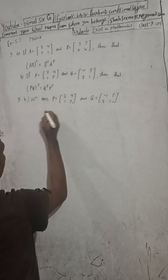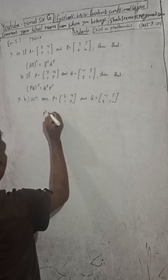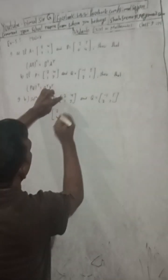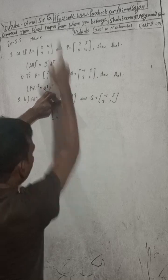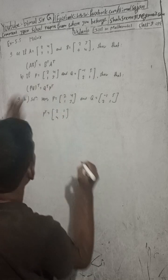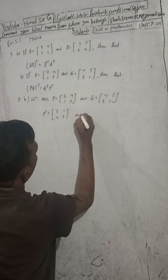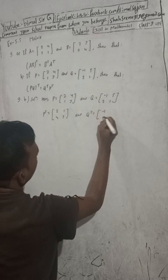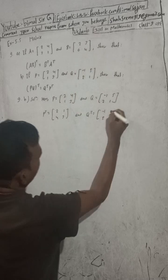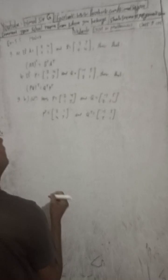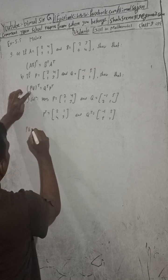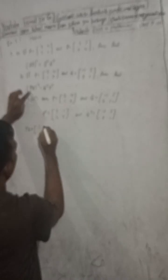First find P transpose and Q transpose. P transpose: interchange row and column. First row [2,4] becomes first column, second row [1,3] becomes second column — so P transpose = [2,1; 4,3]. Q transpose: first row [-1,5] becomes first column, second row [2,1] becomes second column — Q transpose = [-1,2; 5,1].